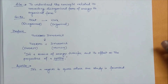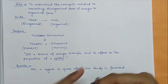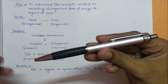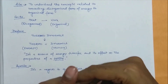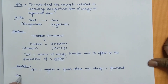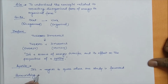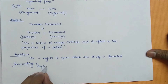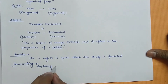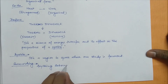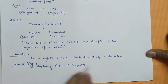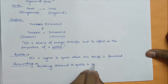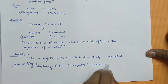Now, when we are considering this pen as a system, everything other than the pen is the surrounding. So we have to define what is surrounding: anything external to the system is known as the surrounding.